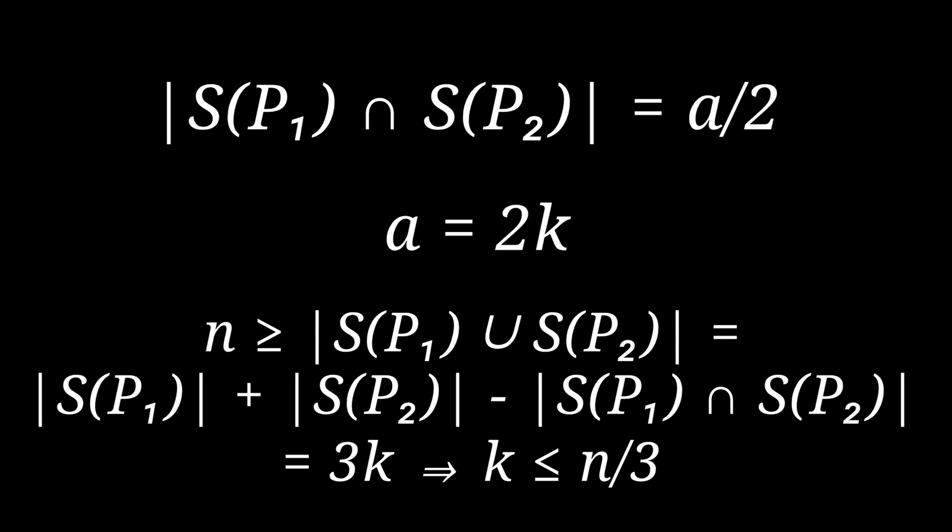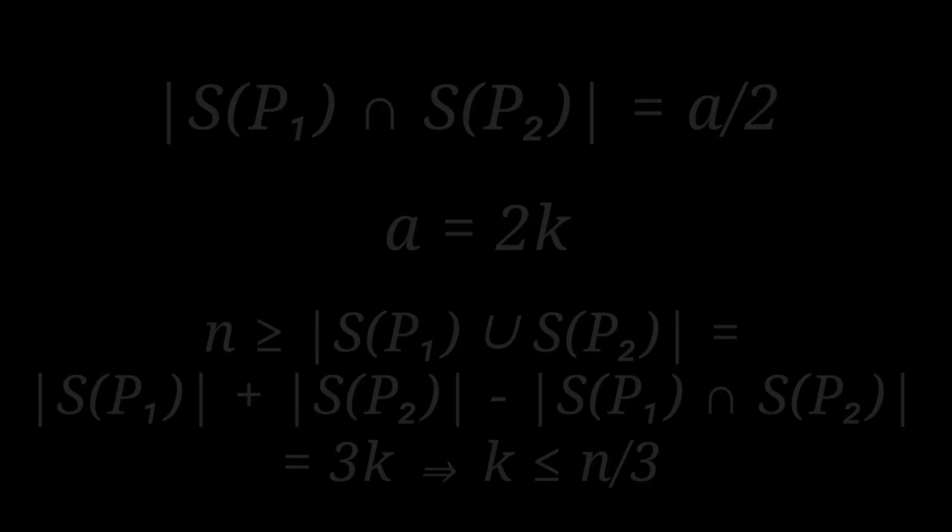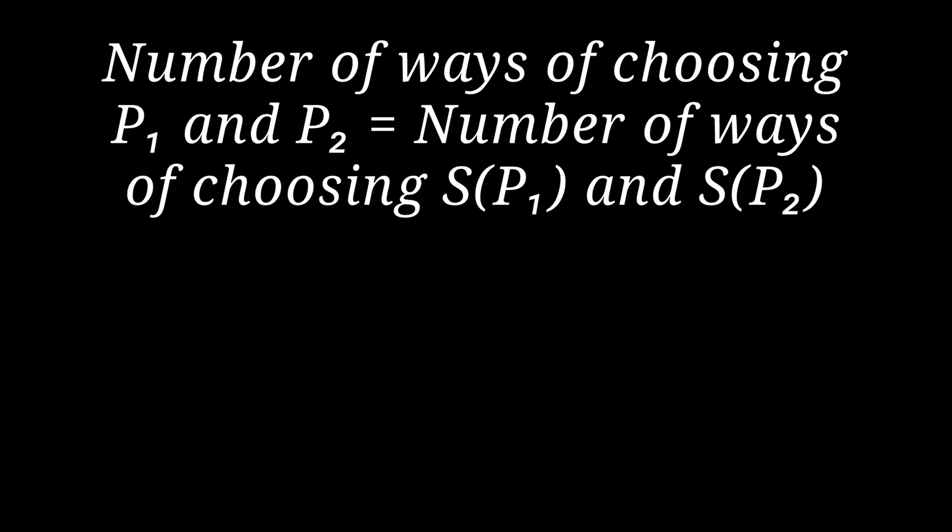And now is the time for some combinatorics. Since the correspondence between S(p1) and p1 and S(p2) and p2 is a one-one correspondence, we can say that the number of ways of selecting p1 and p2 is the same as the number of ways of selecting S(p1) and S(p2).